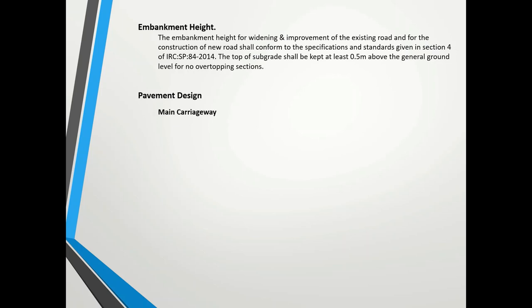Pavement design is one of the most important highway design elements. You have to do it separately for the main carriageway and service road, because in the service road the MSA (Million Standard Axles) will be less — normally around 10 MSA — whereas for the main carriageway you have to calculate based on actual traffic data. Toll plazas also require a separate pavement design evaluation. I have also prepared a playlist for rigid pavement design which you can refer to.